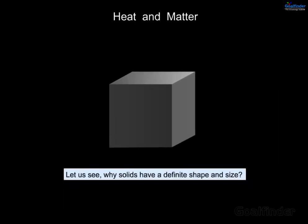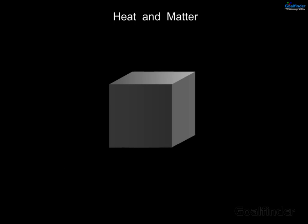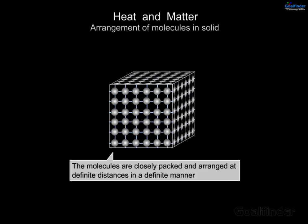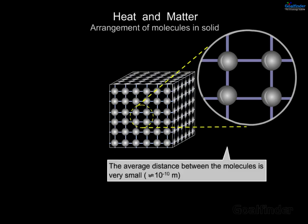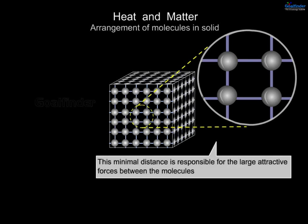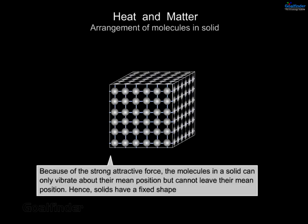Let us see why solids have a definite shape and size. In a solid, the molecules are closely packed and arranged at definite distances in a definite manner. The average distance between the molecules is very small — approximately 10 raised to minus 10 meters. This minimal distance is responsible for the large attractive forces between the molecules. Because of the strong attractive force, the molecules in a solid can only vibrate about their mean position but cannot leave it — hence solids have a fixed shape.